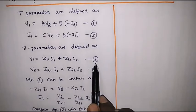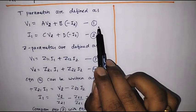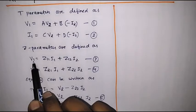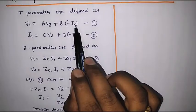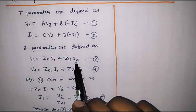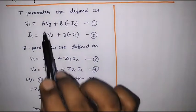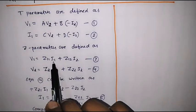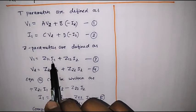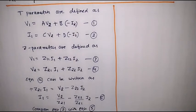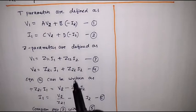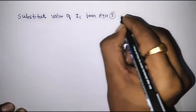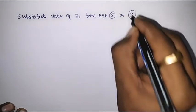Observe equation number three with equation number one. Equation three has a V1 term, as does equation one. Equation one has an I2 term, and equation three also has an I2 term. However, equation one has a V2 term but equation three does not, so we will try to bring in the V2 term. We will substitute equation number five — the expression for I1 — into equation number three.